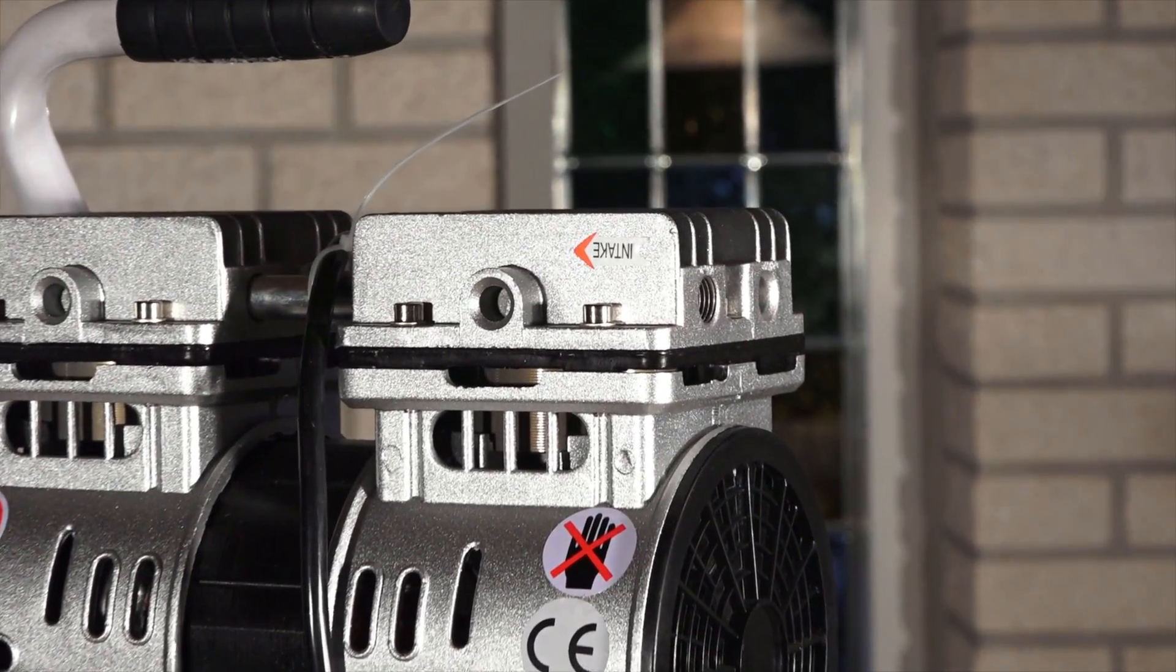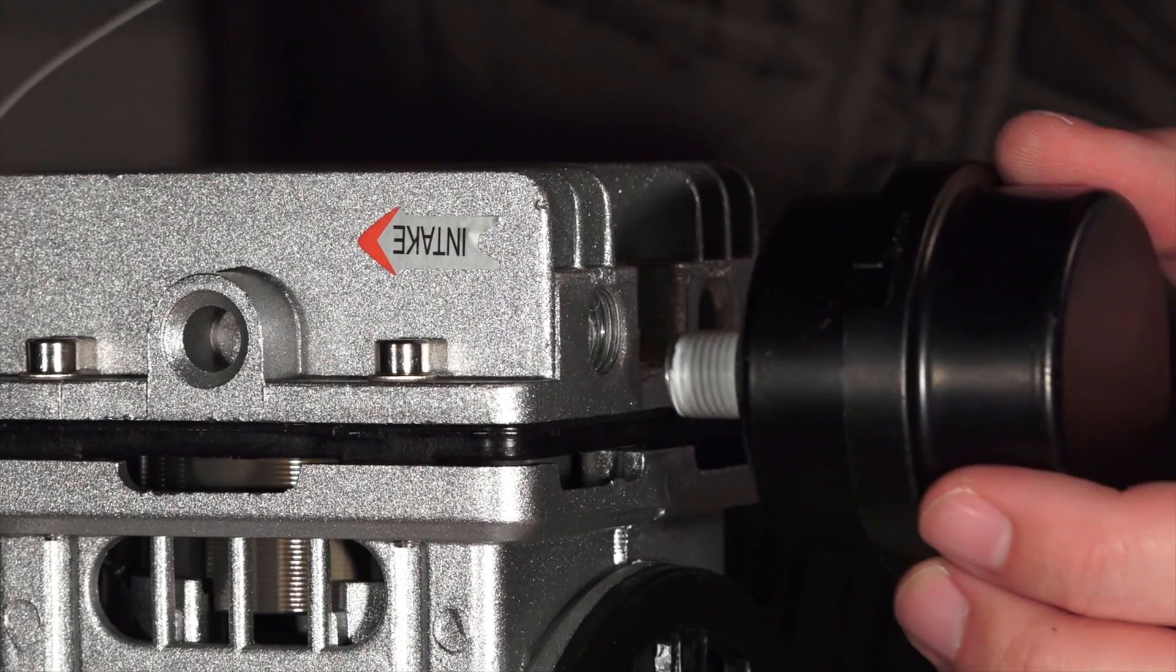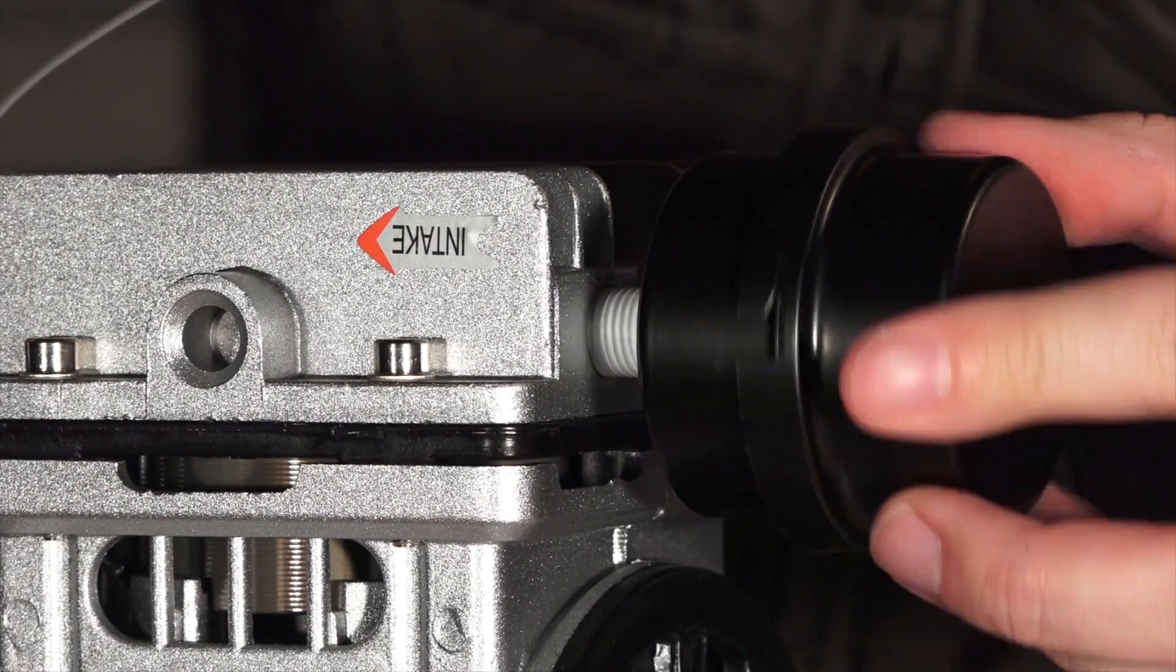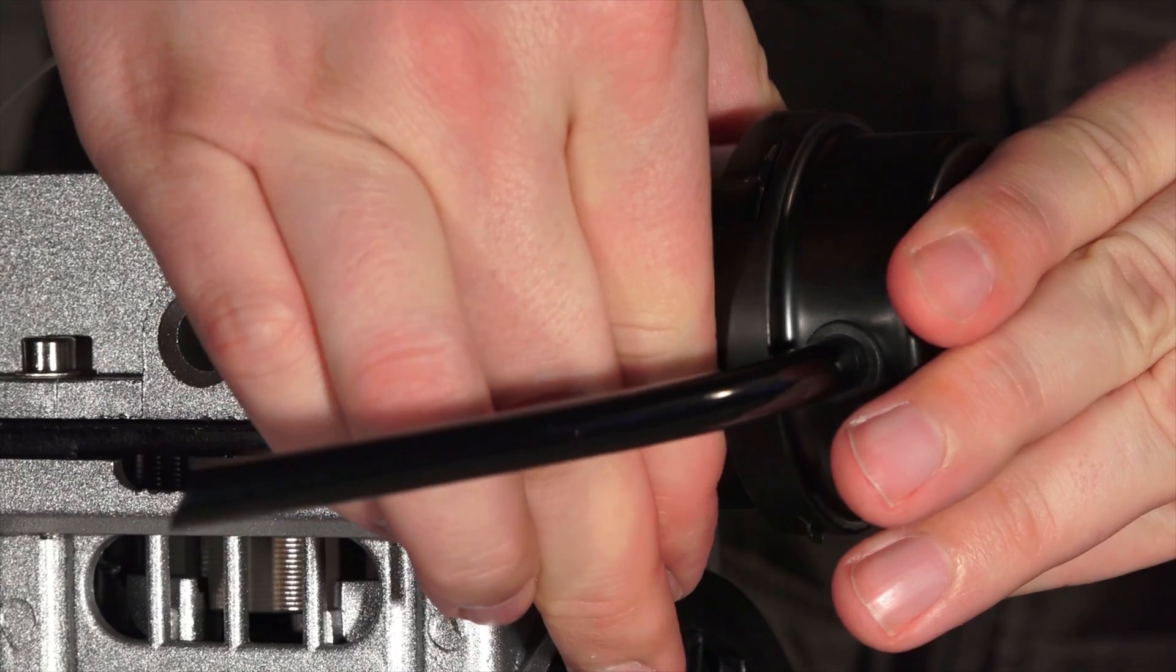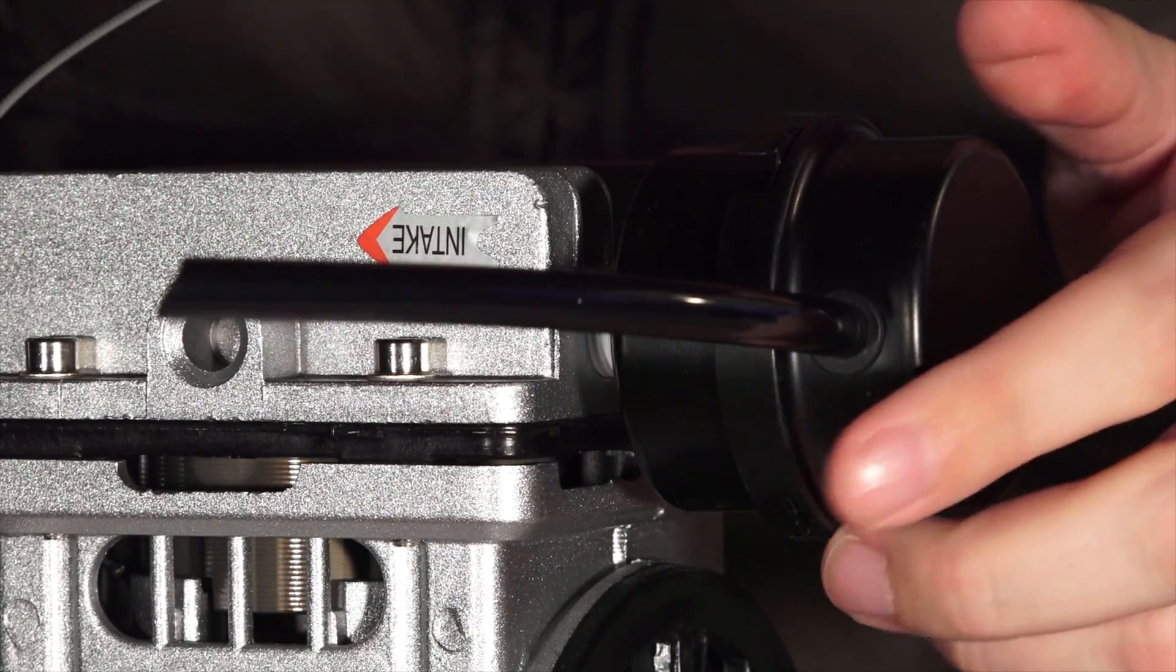After wrapping the tape two times around the thread I installed the filter on the intake. This will not be under high pressure so you only need to tighten it by hand. That was easy.